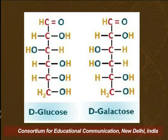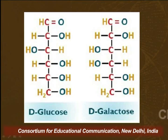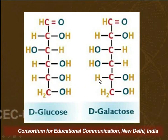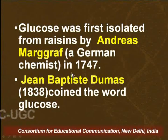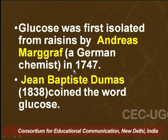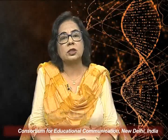As shown on the screens, in glucose the OH at C4 is on the right-hand side, whereas in galactose the OH is on the left-hand side. The capital D indicates that in both glucose and galactose the OH is on the right-hand side at the highest numbered asymmetric carbon. In the upcoming lectures, we shall be discussing the properties of fructose as well as galactose and how they differ from each other.